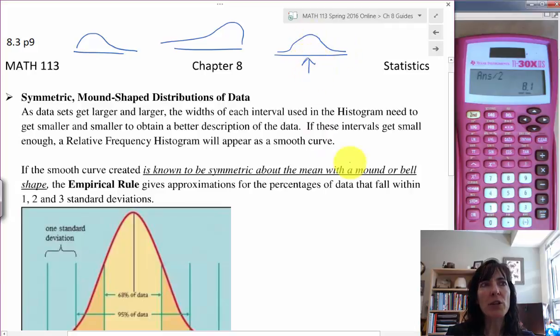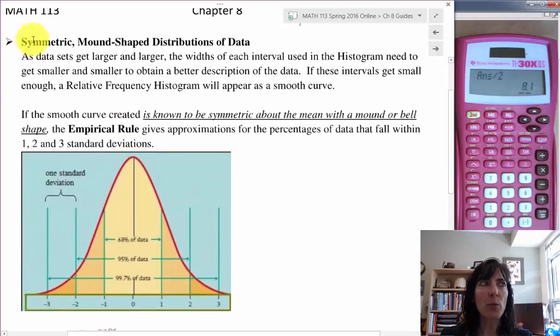When we have a shape of data like this, where it's mostly symmetric on both sides of the mean and the median and the mode, which are all pretty close to the middle, then we can talk about this shape of this data distribution and what that's going to tell us in terms of analyzing our data.